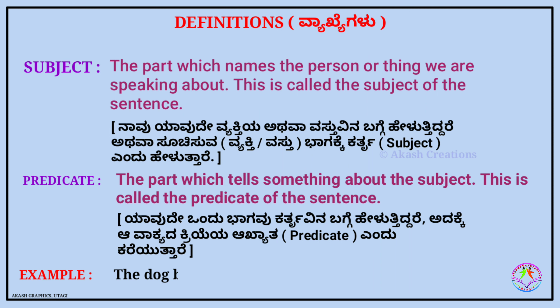For example: 'The dog barks at the cat.' Here, the subject is 'the dog' — the dog is the person or thing we are speaking about.